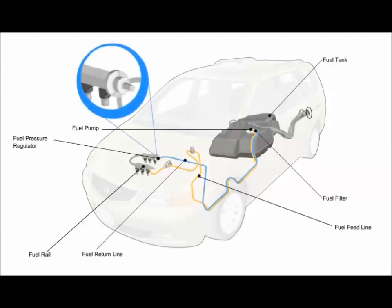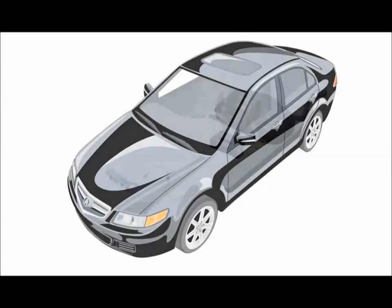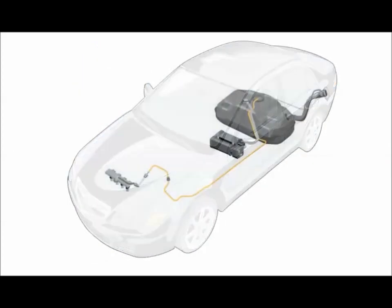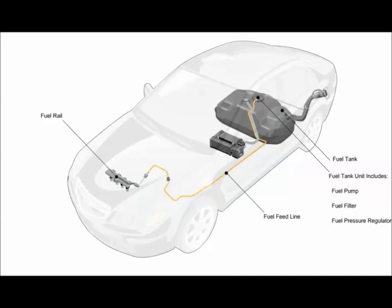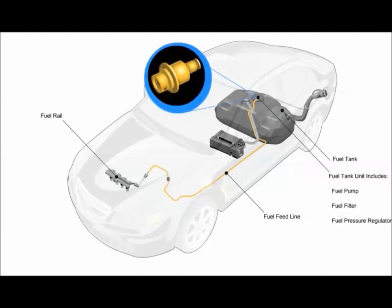On a return type fuel system, the pressure regulator is located on the fuel rail. Returnless fuel supply system has the same components as a return type, including a fuel tank, fuel pump, fuel filter, pressure regulator, fuel lines, and fuel rail with injectors. It does not, however, have a fuel return line. On a returnless system, the pressure regulator is located inside the fuel tank.